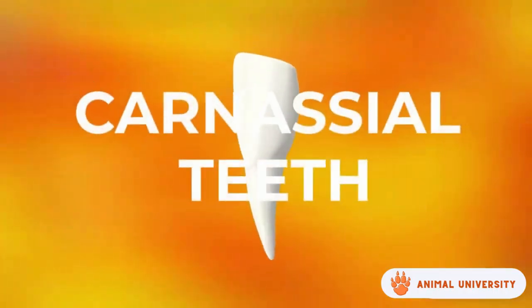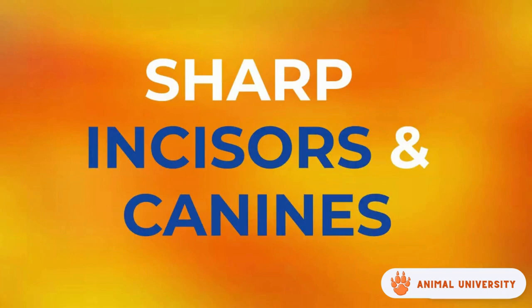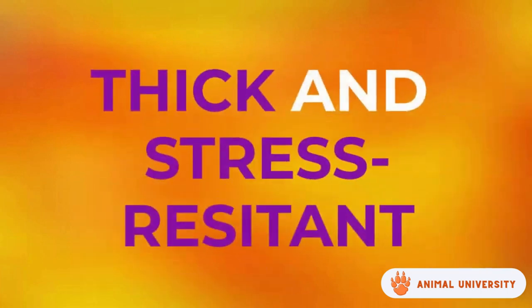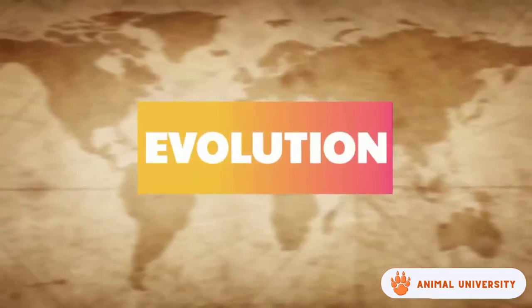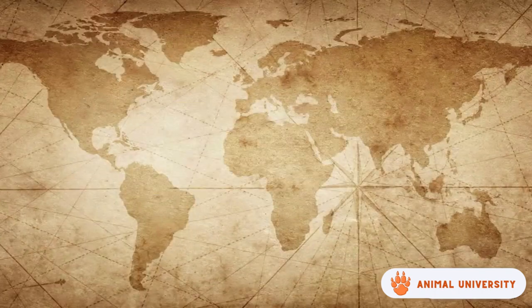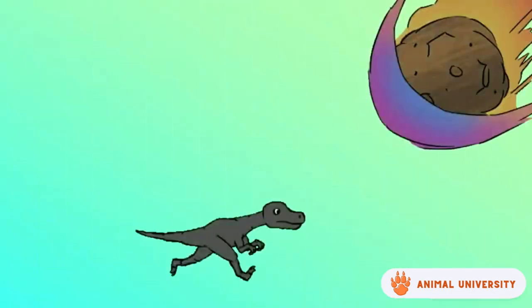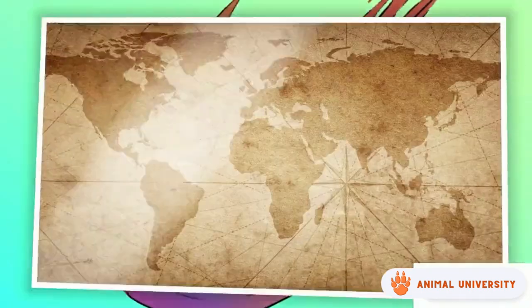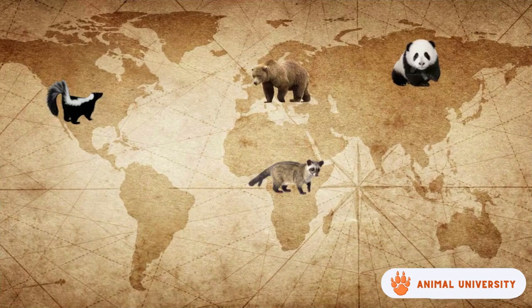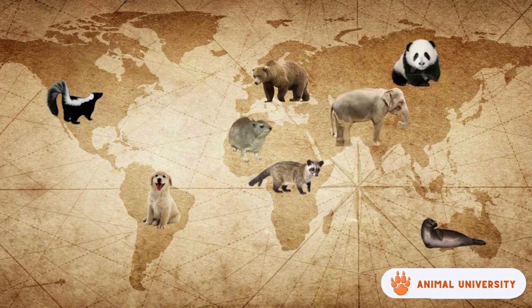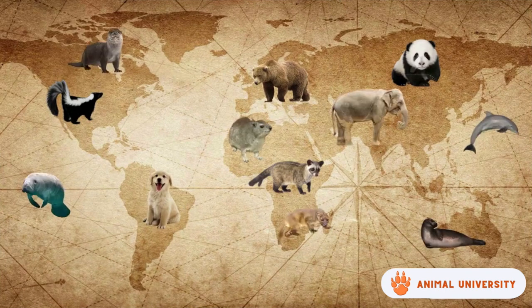This order is the fifth largest order in mammals. They have sharp incisors and canines that are thick and stress resistant. This order first evolved in North America from insectivores around 60 million years ago, just after the extinction of dinosaurs.